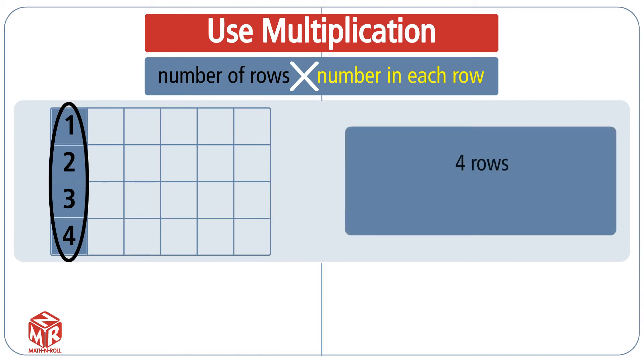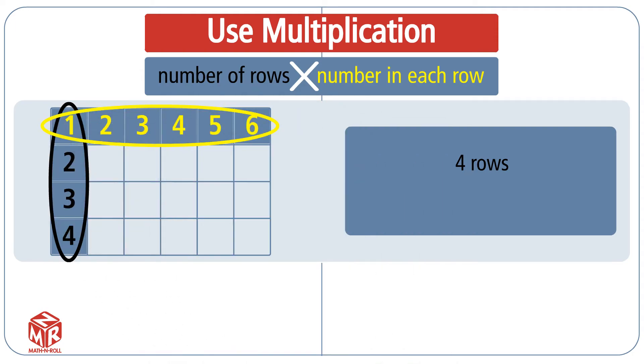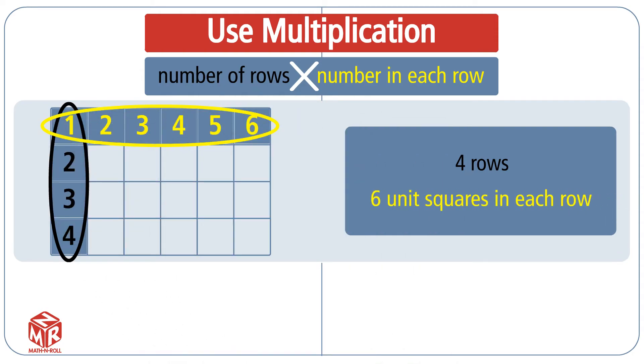We have 4 rows, and 6 unit squares in each row.